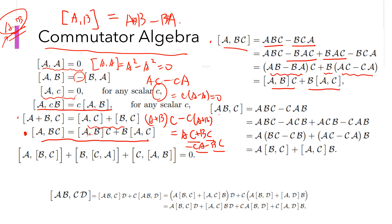And another one is this [AB, C], right? So AB C minus C AB. So we add A C B. We add minus A C B plus A C B. And then pull out A, so we get [B, C]. And pull out B, we get [A, C]. So this is A [B, C] plus [A, C] B.